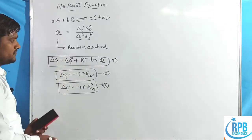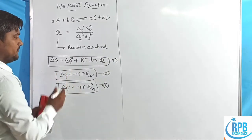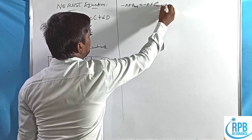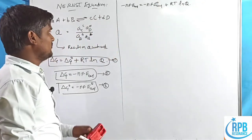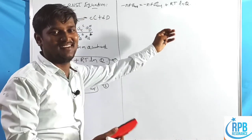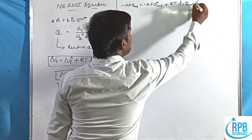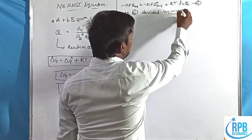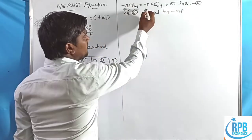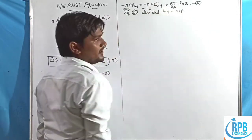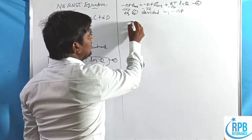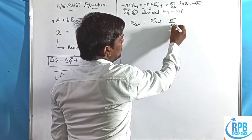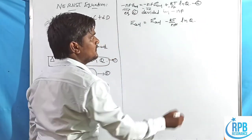Substituting Equations 2 and 3 into Equation 1: −nFE_cell = −nFE°_cell + RT·ln(Q). Dividing both sides by −nF: E_cell = E°_cell − (RT/nF)·ln(Q). This is the Nernst equation in natural log form.